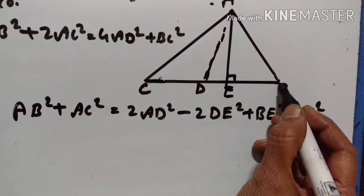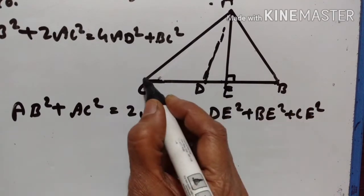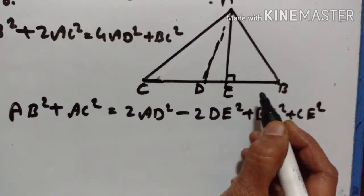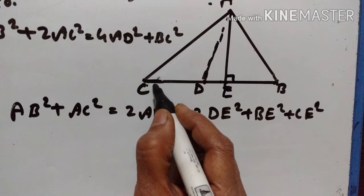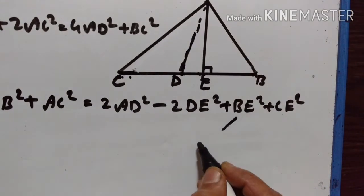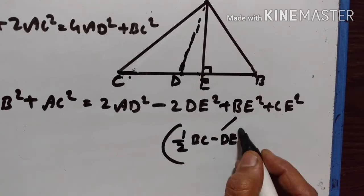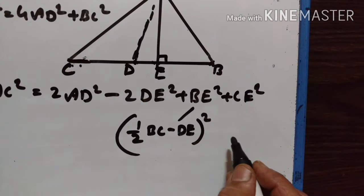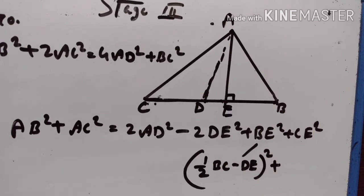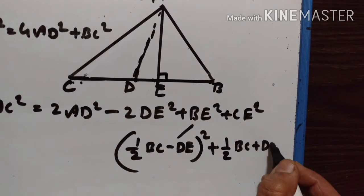Now, what is BE? BE is equal to BD minus DE. Since AD is the median, D is the midpoint of BC, so BD is equal to half of BC. Therefore BE is equal to half of BC minus DE, and BE squared equals (half BC minus DE) squared. Similarly, CE is equal to half of BC plus DE, so CE squared equals (half BC plus DE) squared.